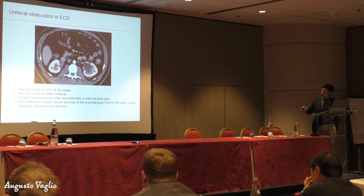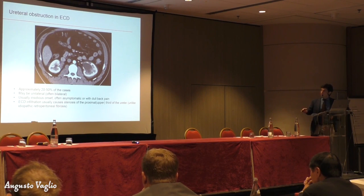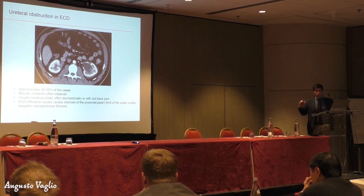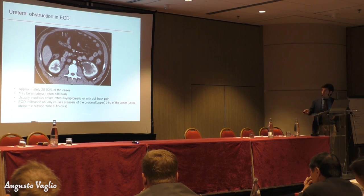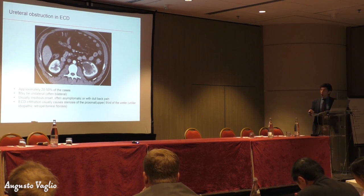When this tissue extends to involve the proximal part of the ureters, as in this patient who has only mild disease around the kidneys, we still see a very important hydronephrosis. Hydronephrosis, which is the result of obstruction, occurs in about 20 to 50 percent of patients. It may be unilateral but often becomes bilateral. It is usually insidious in onset and can be asymptomatic — we have patients who have had hydronephrosis for months or sometimes years without significant symptoms. The stenosis is usually of the upper part of the ureter, unlike idiopathic retroperitoneal fibrosis, which is often a differential diagnosis with ECD and usually involves the middle or lower part of the ureter.